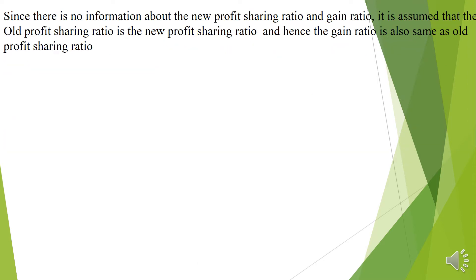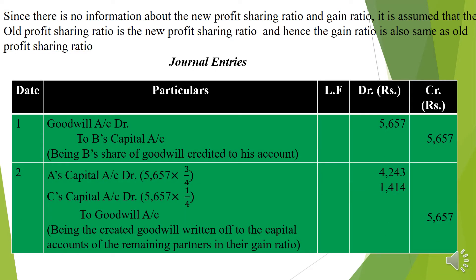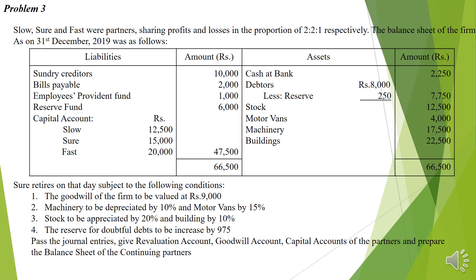Since there is no information about the new profit sharing ratio and gain ratio, we assume they are similar to the old profit sharing ratio. First journal entry: Goodwill Account Dr. to B's Capital Account — 5,657, being B's share of goodwill credited to his account. Since goodwill is to be written off, the continuing partners' capital accounts are debited and goodwill account is credited. A's capital account bears 3/4 and C's capital account bears 1/4, since the remaining ratio of A and C is 3:1.